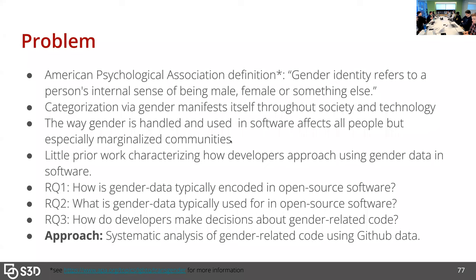Specifically, I was curious about how gender data is typically encoded in open source, what gender is used for in open source data, and also how developers make their decisions about gender data.